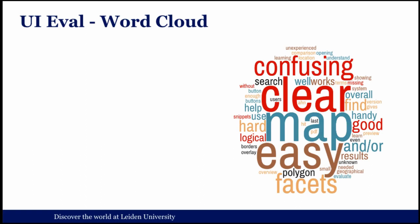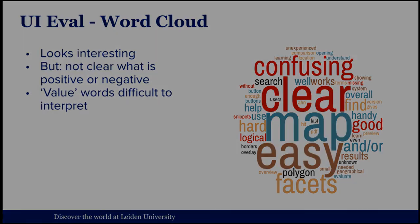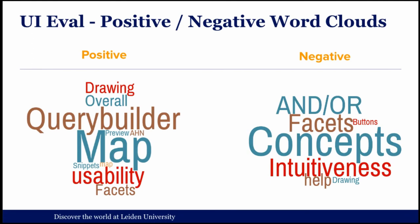For the questionnaires afterwards, I translated them into English and made a word cloud to summarize all the feedback. This looks interesting but the problem is it's not clear what is positive or negative — words like 'confusing' and 'clear' appear without context, and value words like 'good' or 'handy' are very difficult to interpret. But if you split them into positive and negative statements you get a much clearer picture: the query builder and the map are things users like, while negative aspects include unclear facets and AND/OR buttons that are very hard to find.